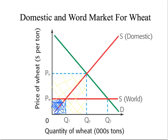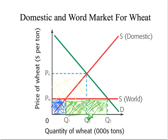What that means is that with this new market opened up, world producers are making up the difference. Q2 is the quantity, and this entire area here represents the gains by foreign producers in the marketplace — this would be revenue for foreign producers of wheat.